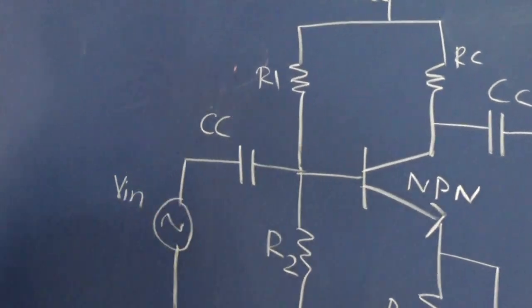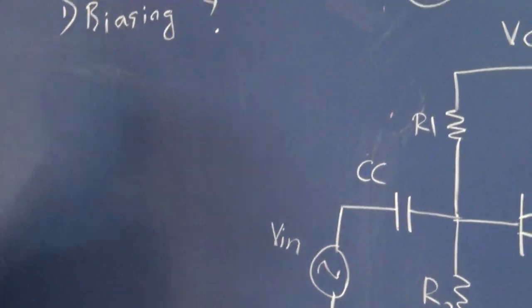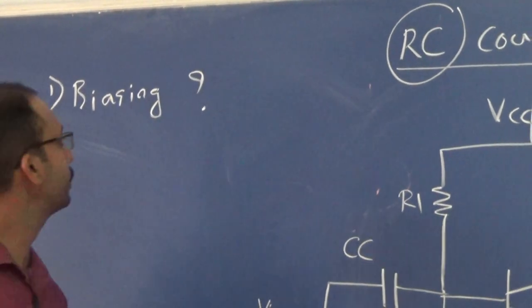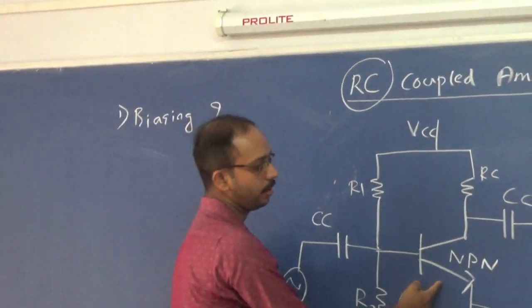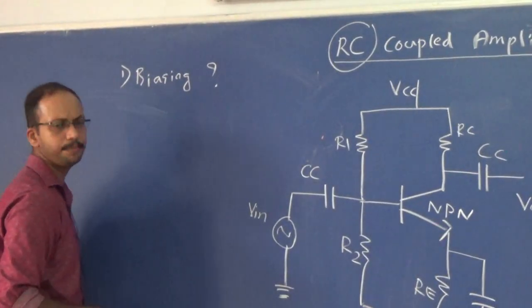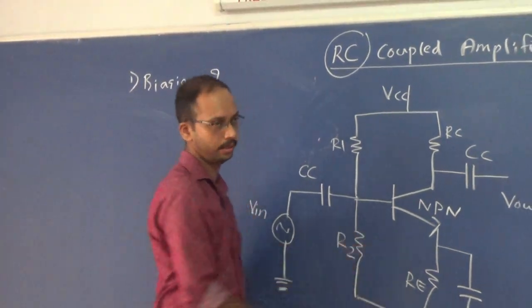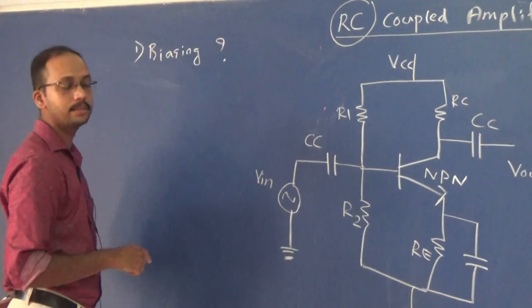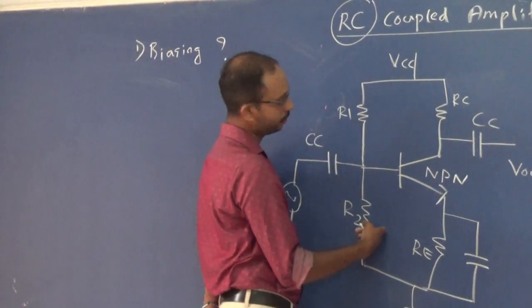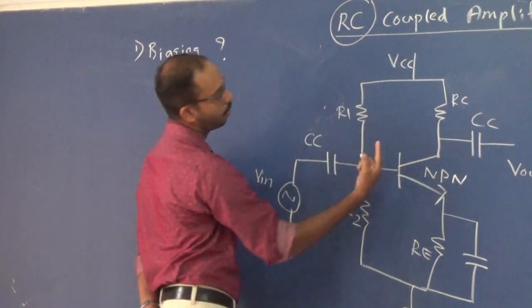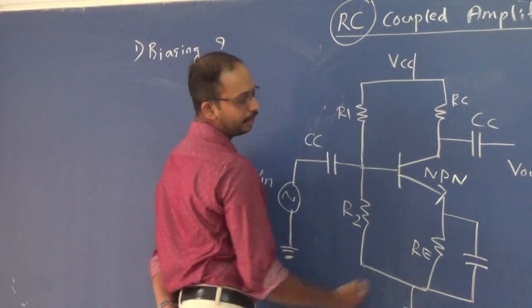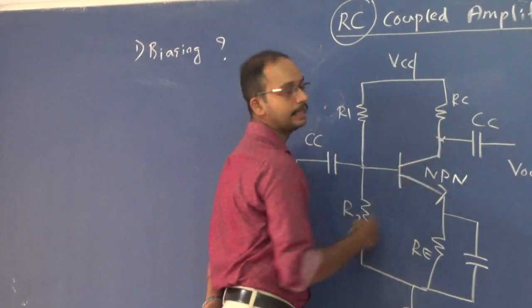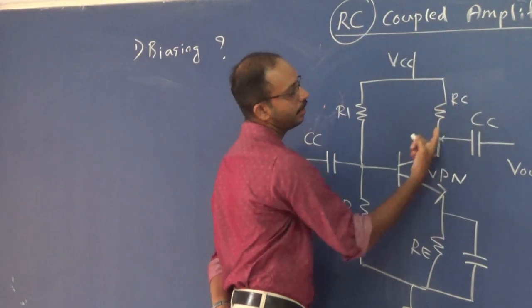Why do we use voltage divider biasing? Biasing is a very important factor because it gives the proper voltage to the NPN transistor to work correctly. If the biasing is not correct, there will be distortion. The voltage divider biasing circuit is chosen because its stability is very high. The voltage divider network consists of R1, R2, and RE, which are mainly used for biasing and stabilization, and we collect the output from the RC collector resistor.